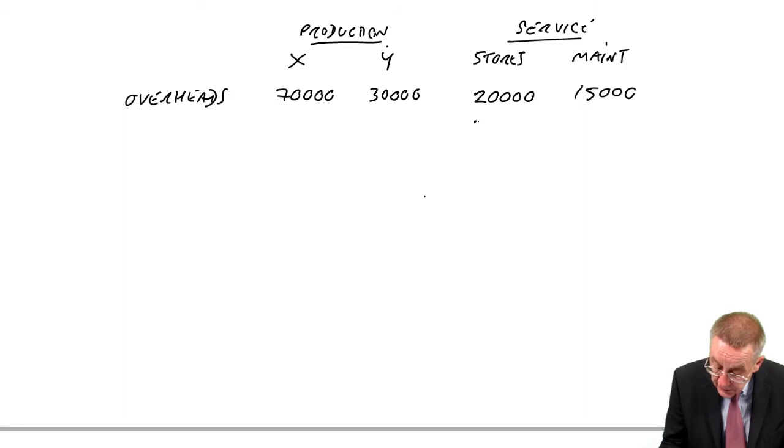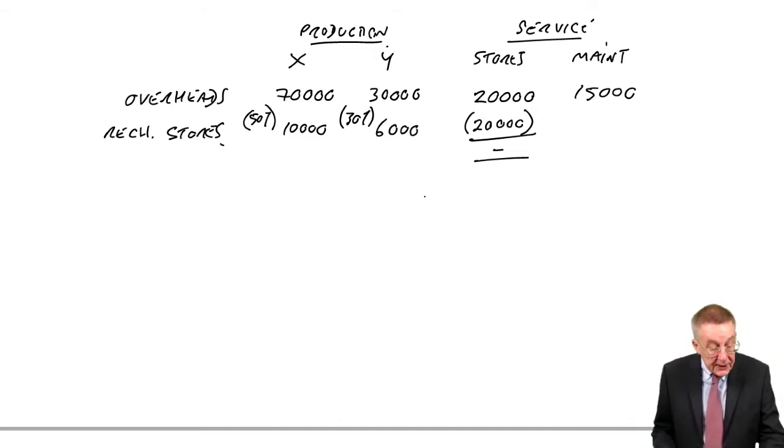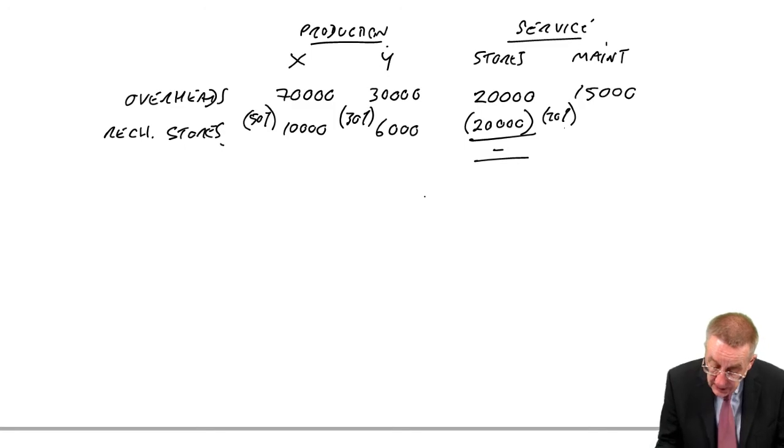So let's recharge stores. There's 20,000. We'll take that 20,000 and we'll recharge. It's 50% to X, so 10,000. It's 30% to Y, which is 6,000. And it's 20% to maintenance, which is 4,000.